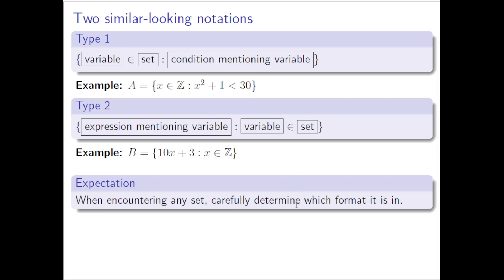Please, I cannot stress how important it is to have this as your expectation. These look super similar if you don't know what to look for — because of the colon in the middle, a part in front and a part after, notation all over the place, curly braces. You've got to know what to look for and always determine which format your set is in. Right now, the reason is that these two things are read extremely differently. Set A and Set B are read totally differently from each other, and that's all the more reason to be careful.